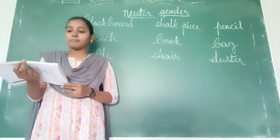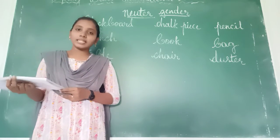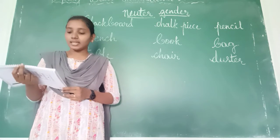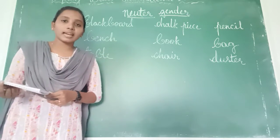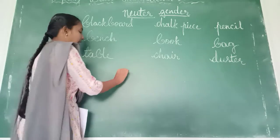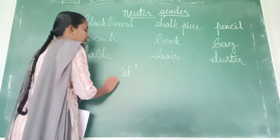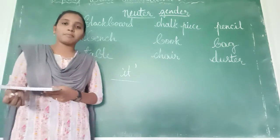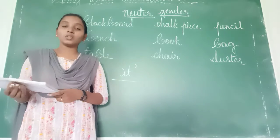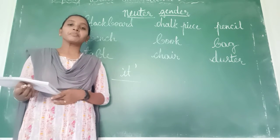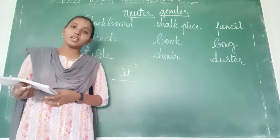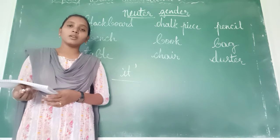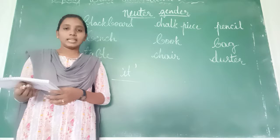We use the pronoun 'it' to replace nouns in the neuter gender. What do we use? The pronoun 'it' — to replace the neuter gender. Neuter gender means non-living things. For non-living things we will use 'it.'